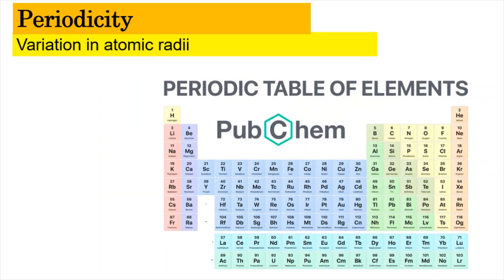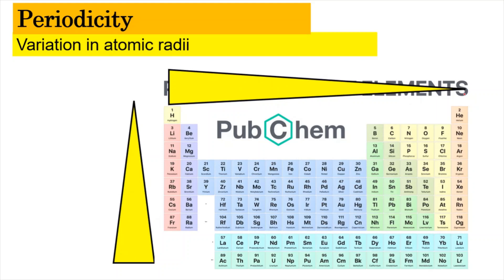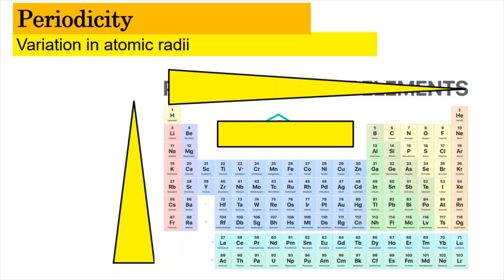This summarizes the variation of atomic radii we have learned. Down the group, sizes get larger because of the increase in the principal quantum number. Across a period, sizes get smaller because of the increase in proton number, which raises Z_eff. For the transition elements, the size remains constant. A way to memorize this is to think of it as 'naik bukit' — climbing a hill: the sizes decrease as you go across to the right, and then at the middle is the constant region of the transition elements.